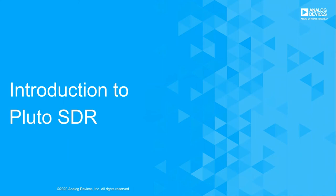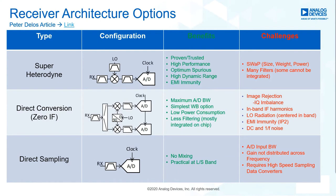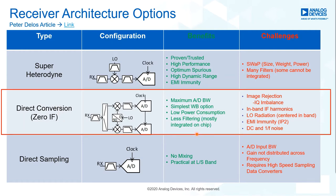Now let's take a look at Pluto SDR. There are three main receiver architectures: super-heterodyne, direct conversion (also known as zero-IF), and direct sampling. We're focusing on the receive side here since transmitters are simpler. All ADI SDR products use the zero-IF architecture, which provides the best balance between performance, integration, and power consumption.